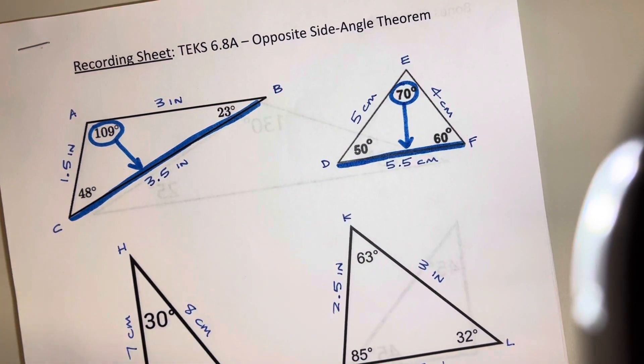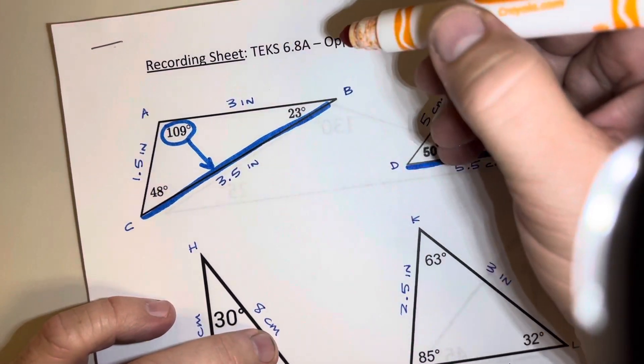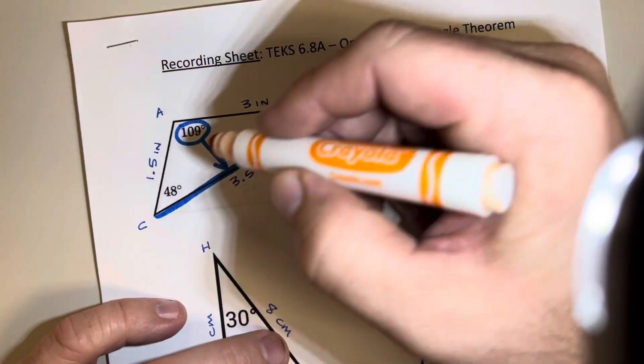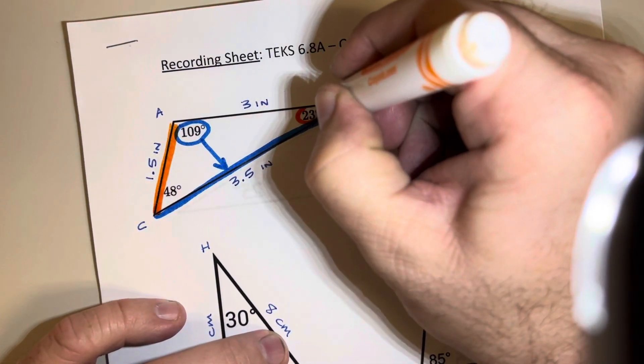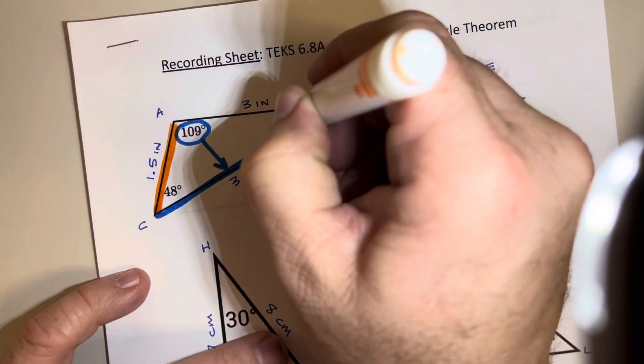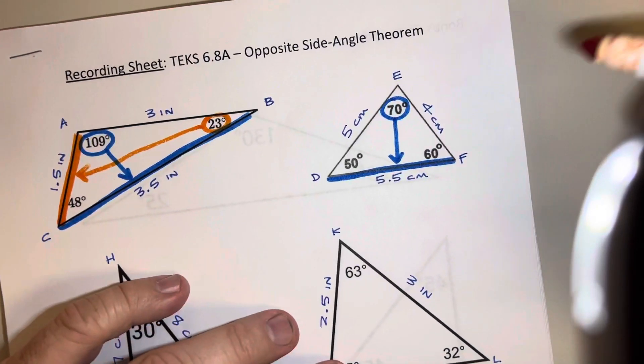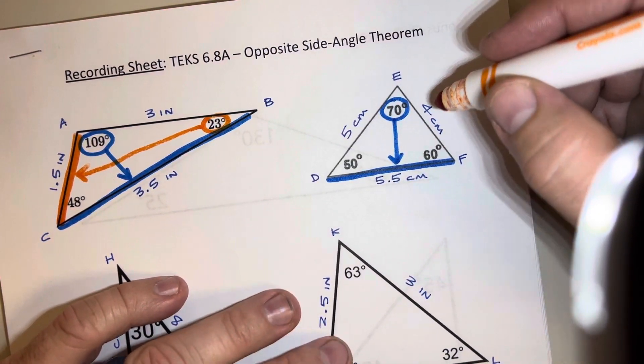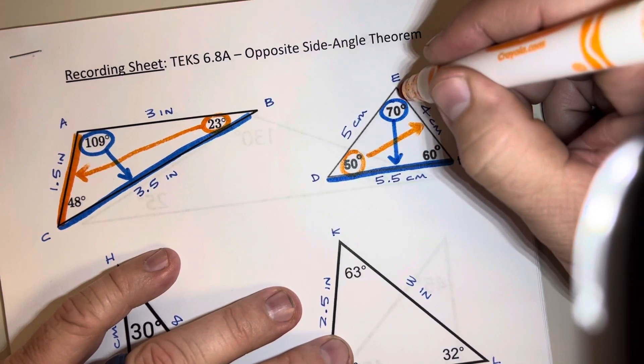And we kept going and we said okay well what about the shortest side and the shortest angle? And that's true as well because 1.5 here is the shortest side and that's across from the shortest angle. So you can kind of see by me drawing there, they're across from each other. That's going to be the same. Over here 4 is the shortest side and it's across from the shortest angle.